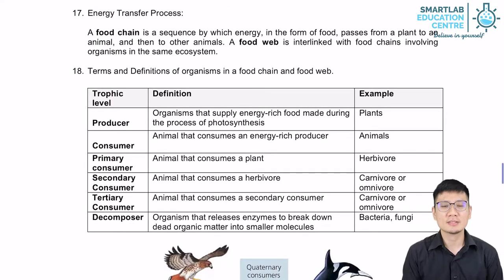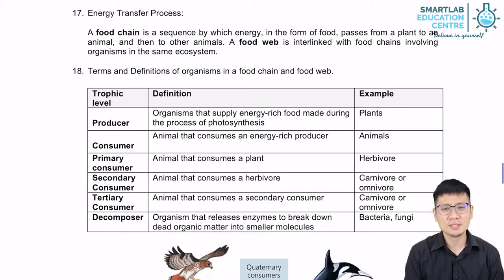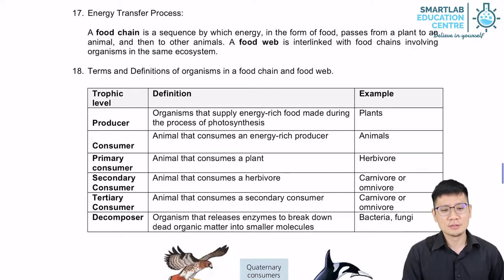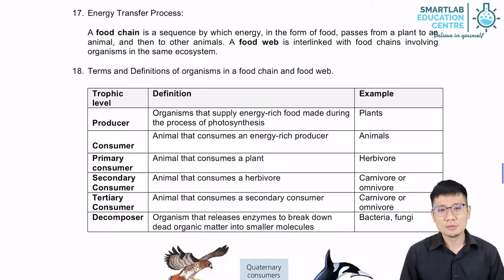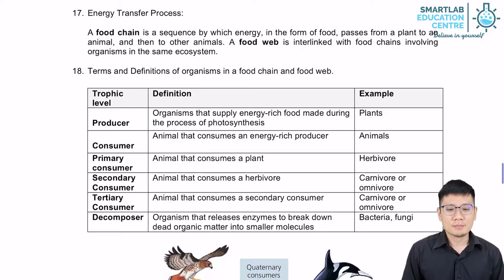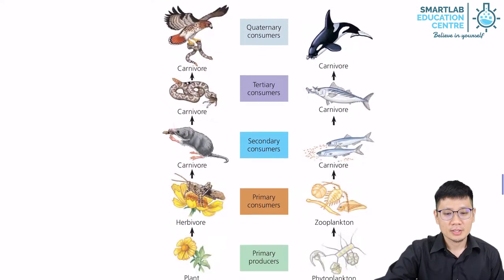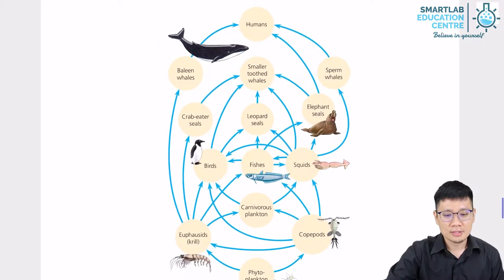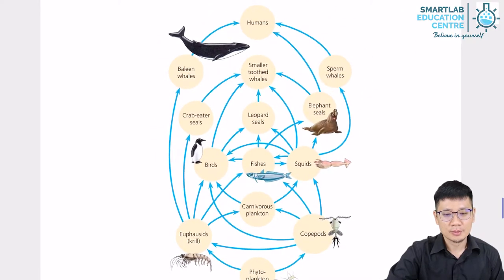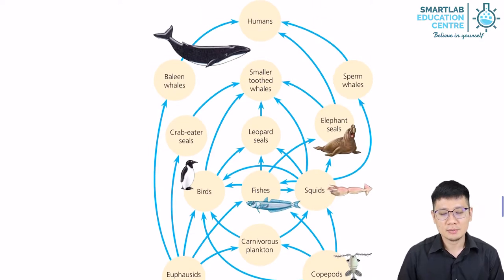Welcome to another presentation on ecology. This time we're going to take a closer look at food chains and food webs. As in a previous presentation, I've already introduced the concept of a food chain with the producers and the consumers. Now a food web is basically made of many different food chains all connected to one another.